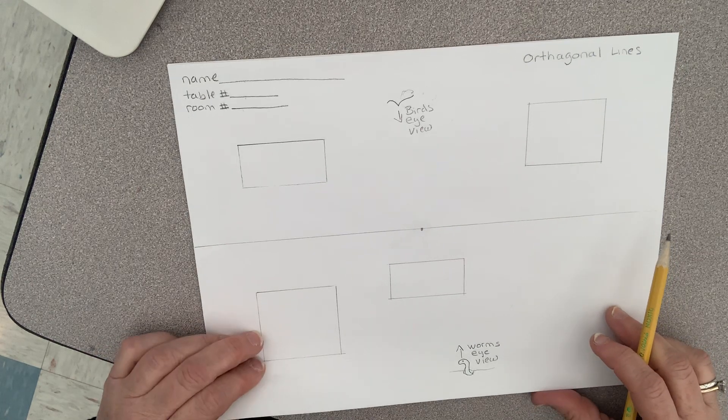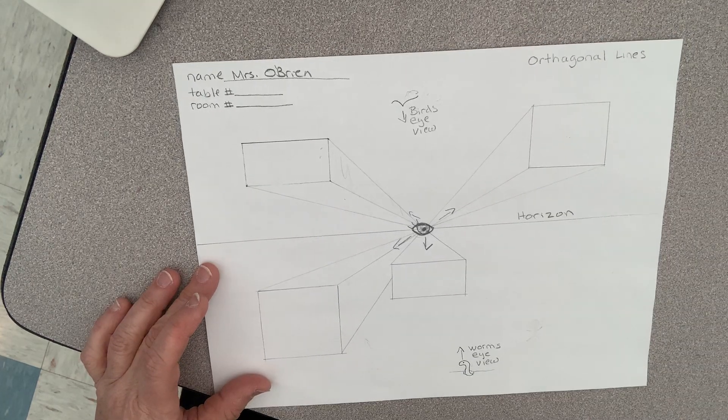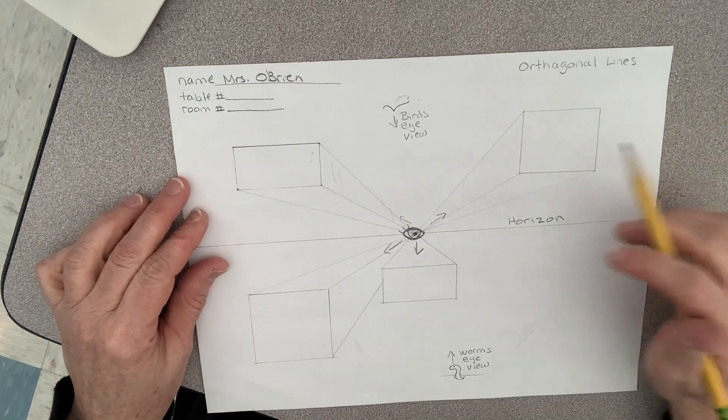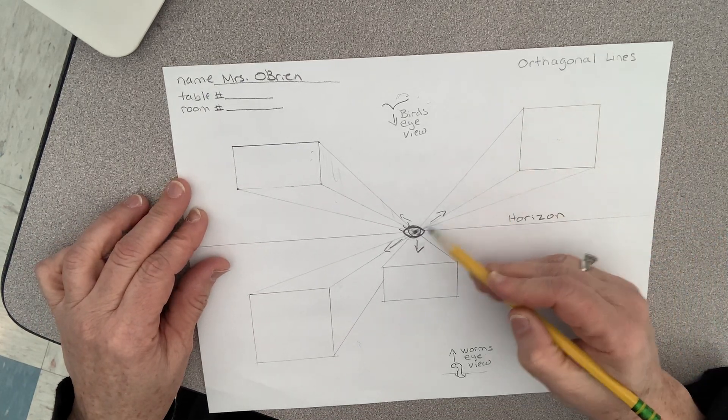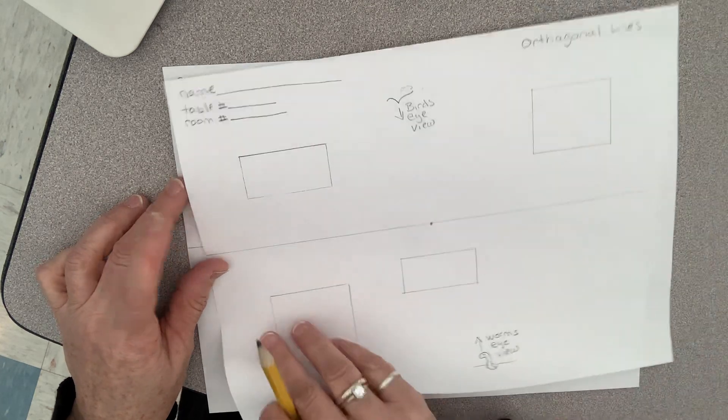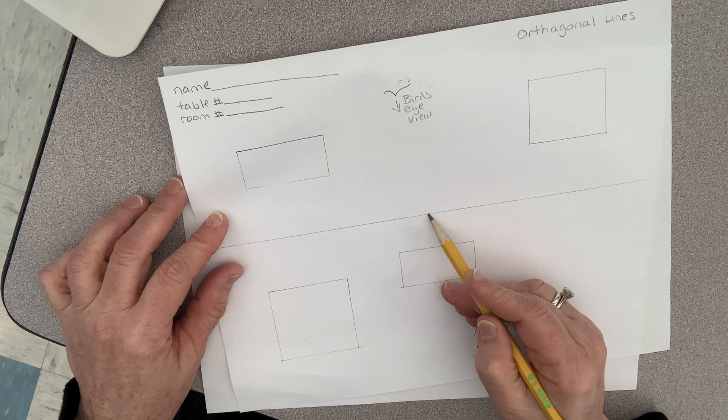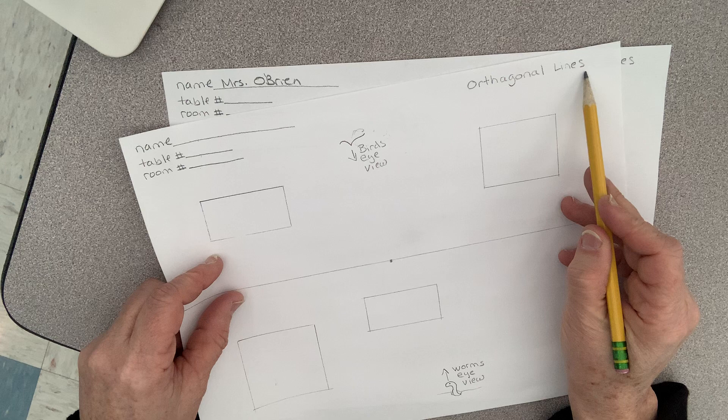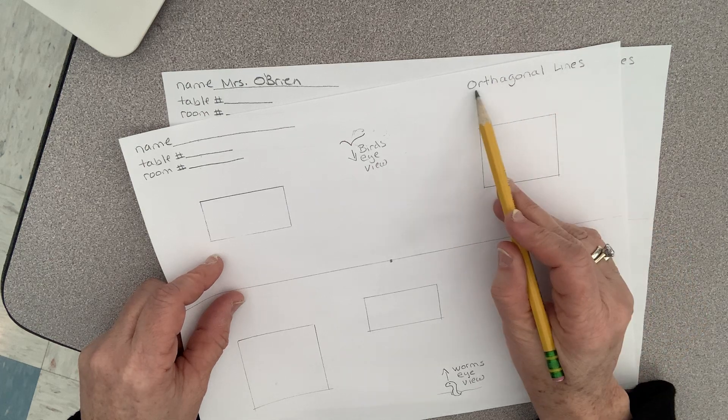Now I'm gonna show you one that's finished and even has some extra things on it. These lines are diagonal lines, but they all end at the vanishing point, so they are all orthogonal lines.